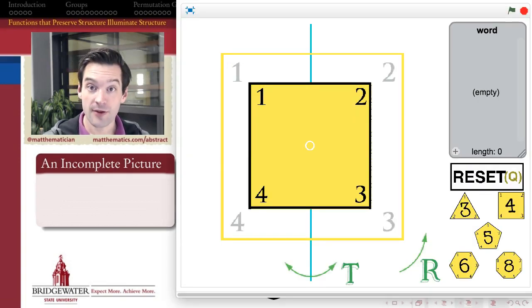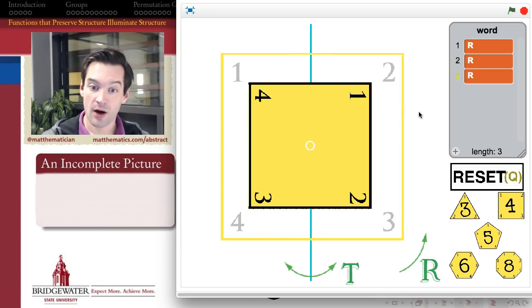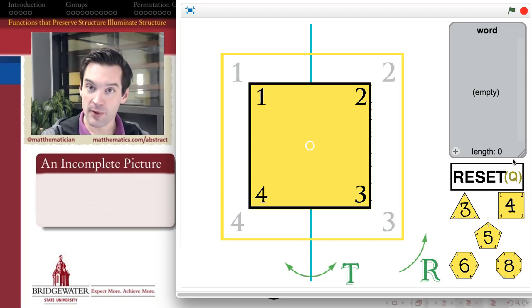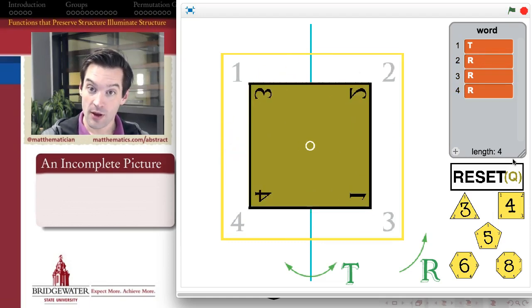As a reminder, is there a function which could take the identity, the single rotation r, r squared, r cubed, and r to the fourth which is again the identity—all of those rotations where we see the numbers 1 through 4 on the right side of the square, so I haven't flipped over the square at all—and group all of those together? And in which t and tr and tr squared and tr cubed will all be grouped together as well, because those are all reflections, but grouped separately from the rotations?